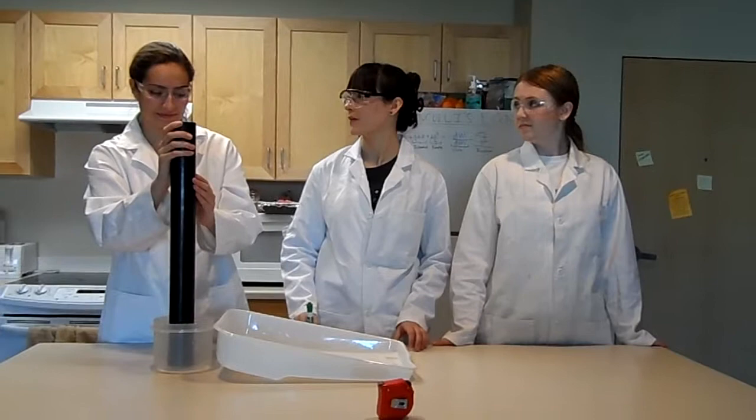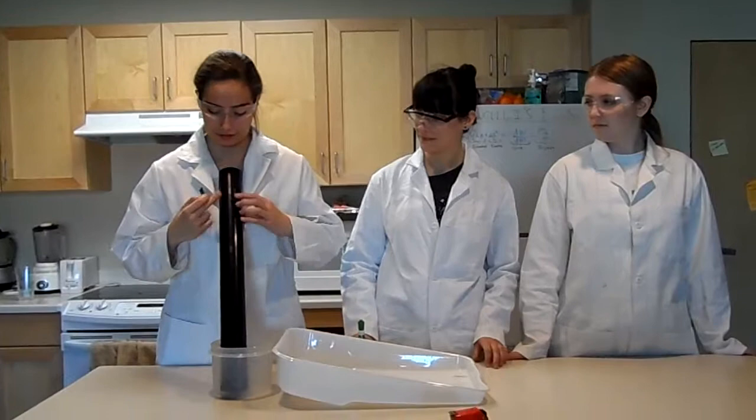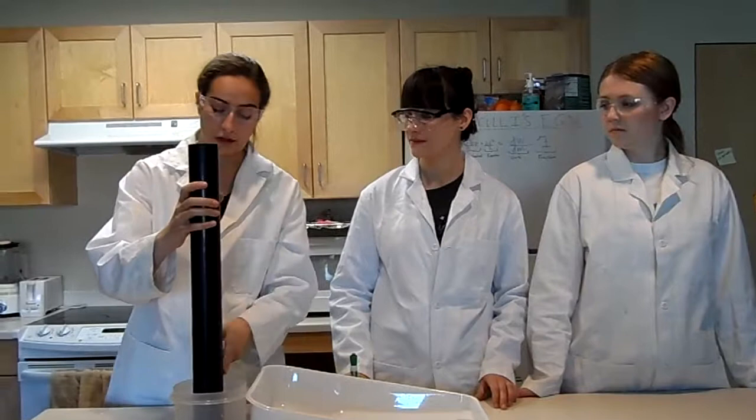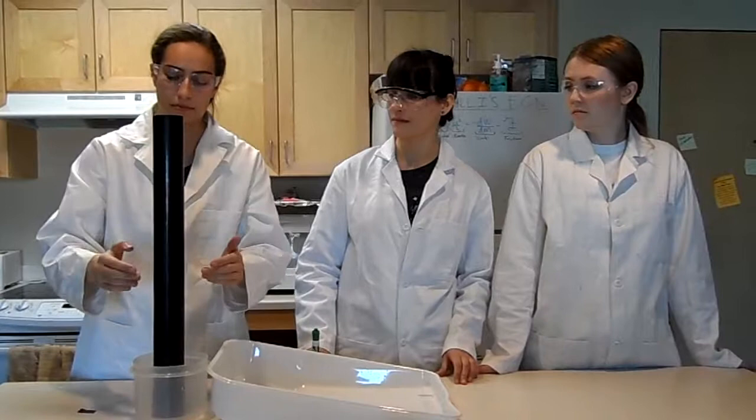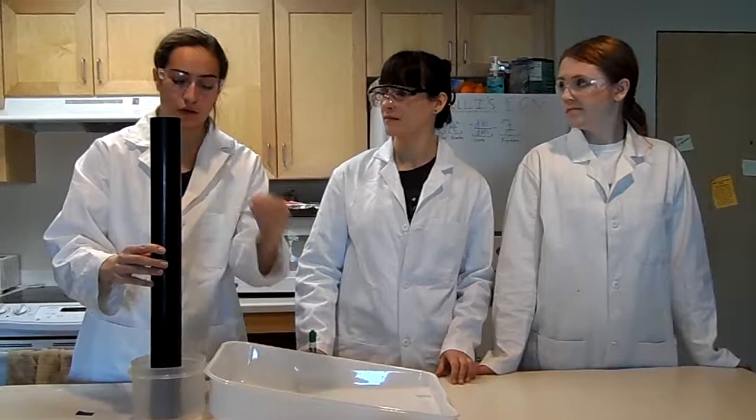We have here a tube with three different holes at three different heights. We're going to fill this with water all the way to the top. The lowest hole is going to shoot out the furthest because it has the most pressure on top. But because pressure decreases with height, the higher up the pipe we get, the shorter the stream will get.